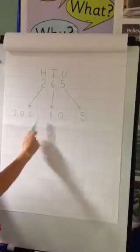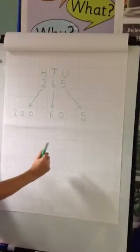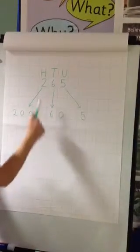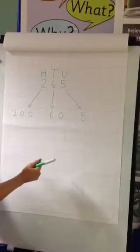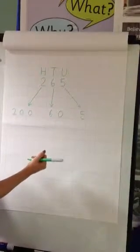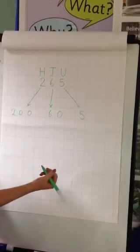So when you add the three total values together, it equals 265. Now it's time for you to have a go of your own, partitioning a three-digit number.